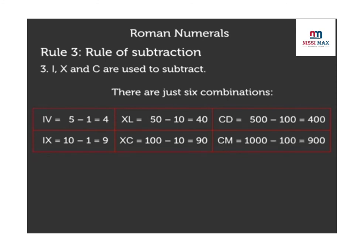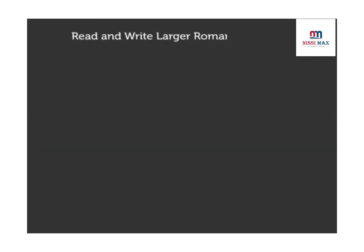Now if larger Roman numerals are given, how do we read and write them? Look at example 1. What is MCMXXXI equal to? Keeping in mind the rules explained earlier, we first write this number into thousands, hundreds, tens, and ones as M plus CM plus XXX plus I.